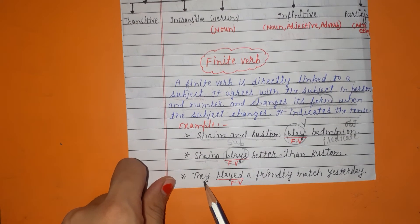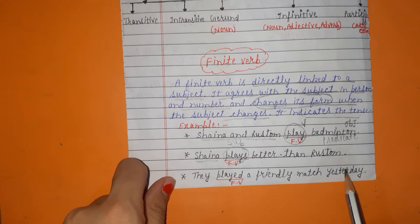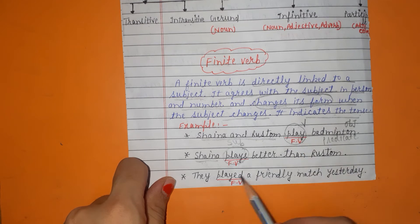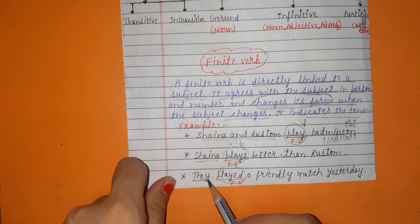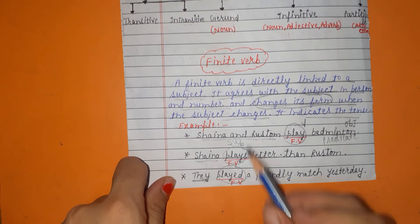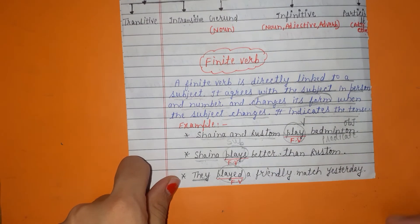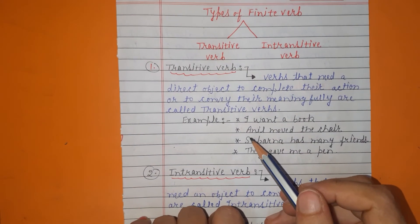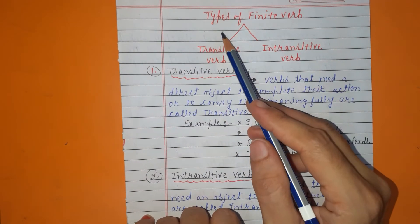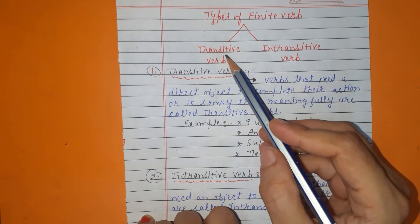Next example: 'They played a friendly match yesterday.' Here the same verb 'play' changed into 'played' because we changed the subject. Students, keep in mind that when we change the subject and the verb is affected by it, then the verb is a finite verb. I hope finite verb is clear to you all.